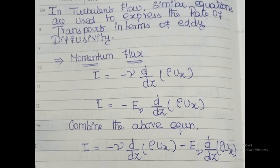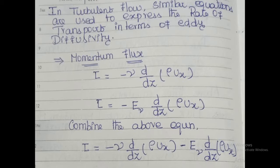In turbulent flow, Newton's law of viscosity states that shear stress is directly proportional to velocity gradient. Removing the proportionality, we add a constant — that is the eddy diffusivity. So instead of momentum diffusivity (nu), we use eddy diffusivity (e_nu) because the flow is turbulent or irregular. Therefore, tau equals minus e_nu times d/dz of (rho times ux).